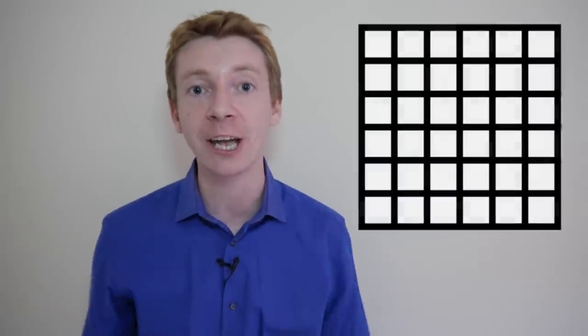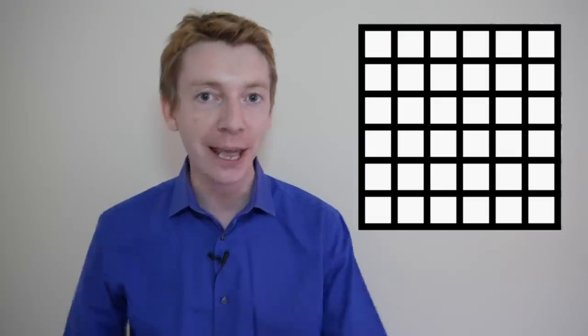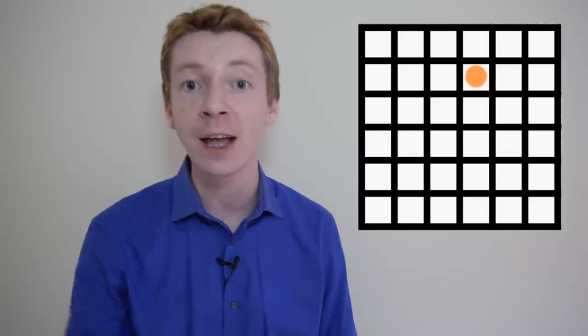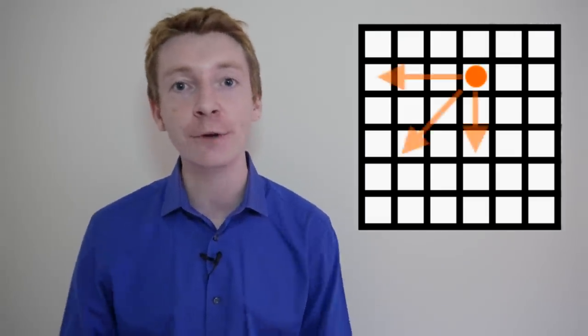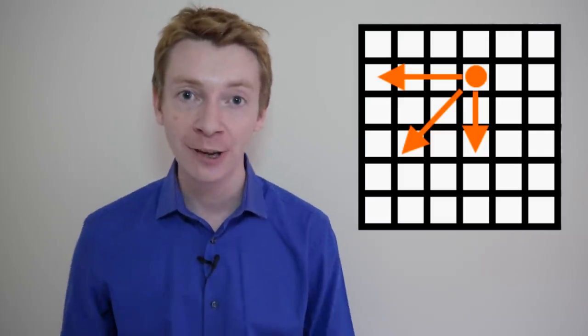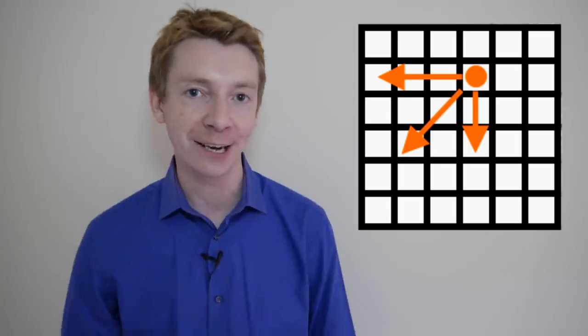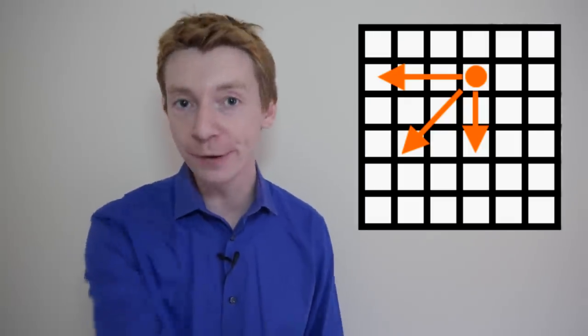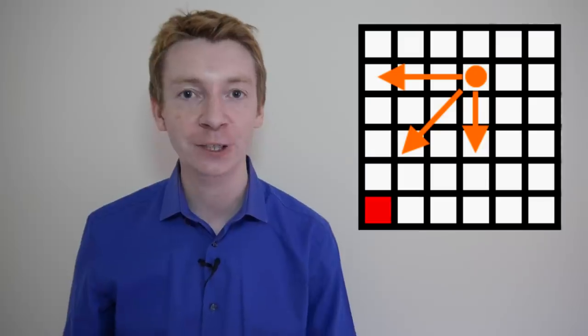It's called Witthof's Game. And as a quick recap, you play it on a chessboard, and there are two players who take it in turns to move a piece. And that piece can move any number of squares to the left, any number of squares down, and any number of squares on a down-left diagonal. And the winner is the one who moves the piece to the bottom-left square.